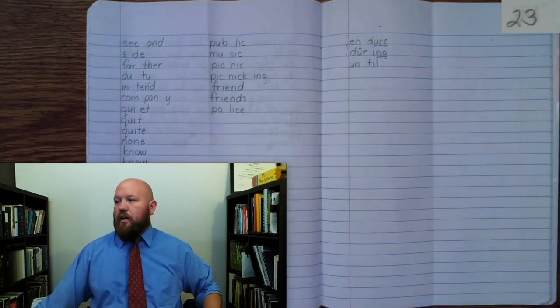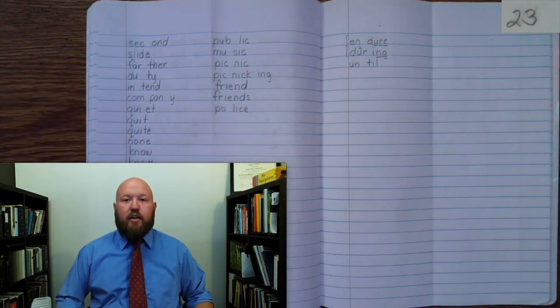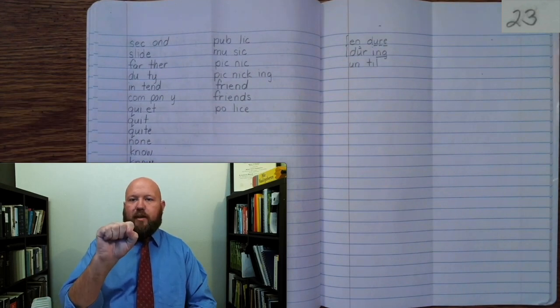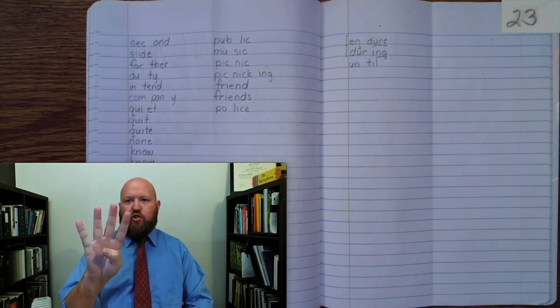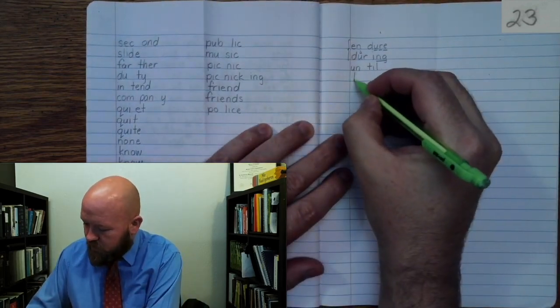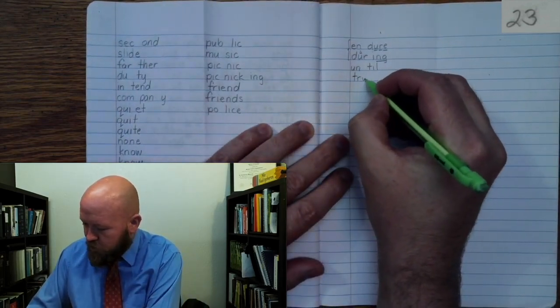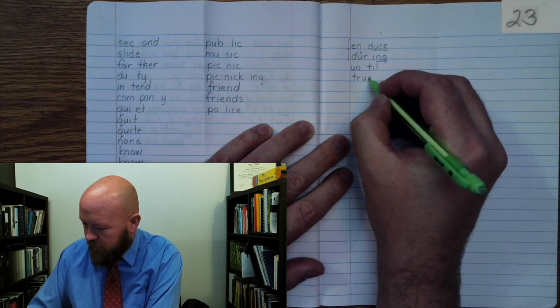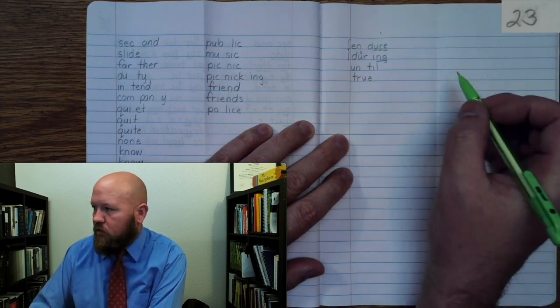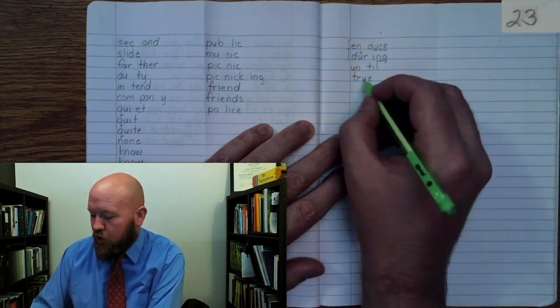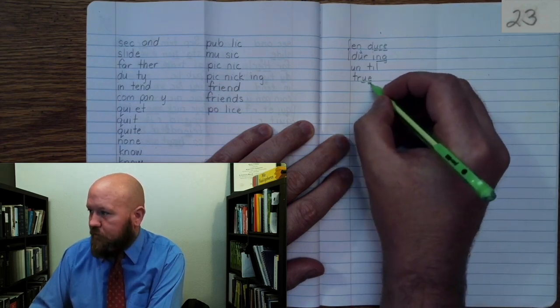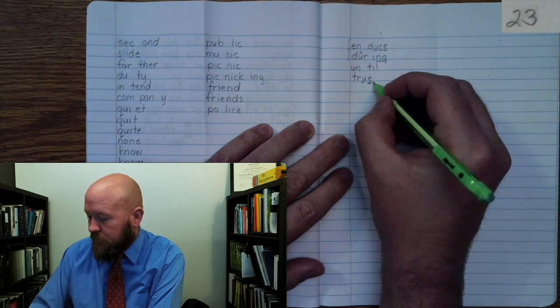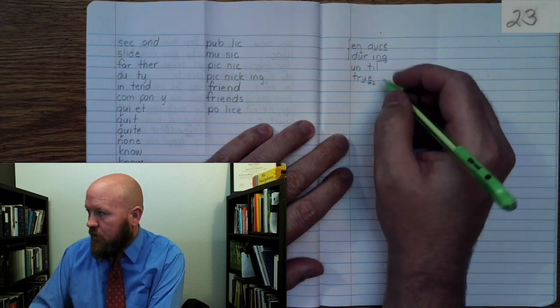Next word is true. Like, be true. True. Base word, true. T-R-U-E. True. Right, true. T-R-U-E. True. Markings. T-R-U once, E twice. Twice.